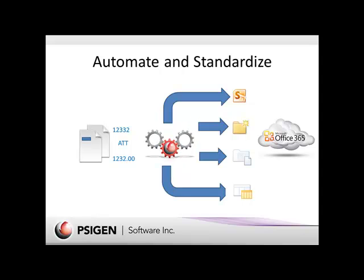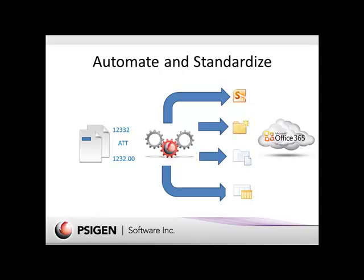We can pick up documents, look at information on them, determine what they are and what project they're for — either based on a barcode, extracted data, or even a contract number — and then auto-route to site, folder, library, or even place just the metadata into a list in Office 365.